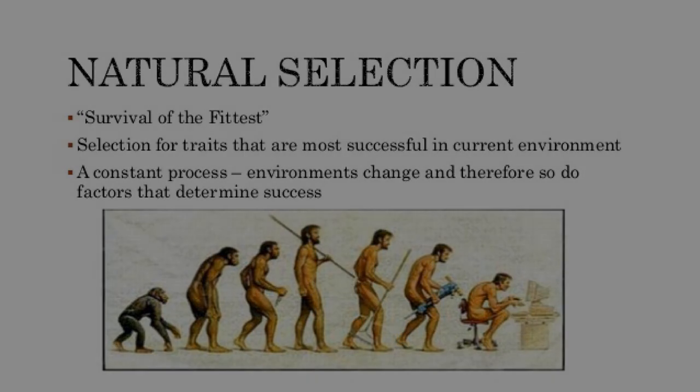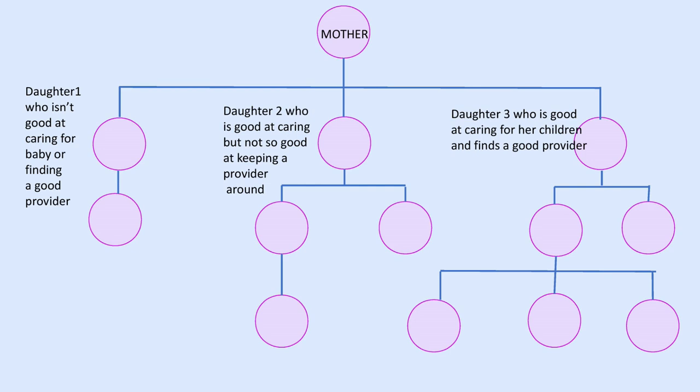Consider an example: one female is interested in artistic work or cave paintings rather than child care, and she might possibly have one child but not look after that child well. So her patterns don't get reproduced into future generations. A second offspring is more keen on mating and child care but doesn't pay much attention to who she mates with, ending up with a couple of kids without many resources — so her patterns don't get transferred either. A third offspring is keen on mating, keen on child care, and very good at selecting a mate who provides resources — so her behavioural genetic patterns will get transferred into the future.